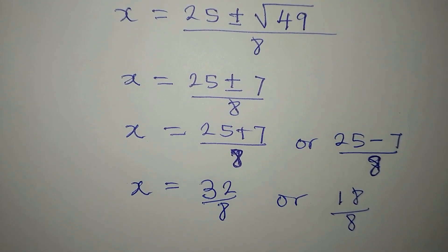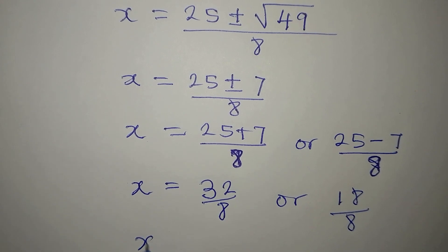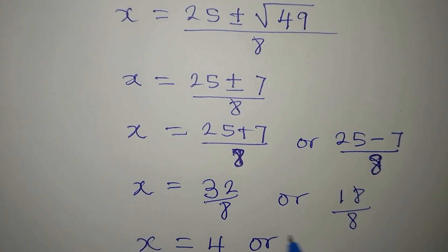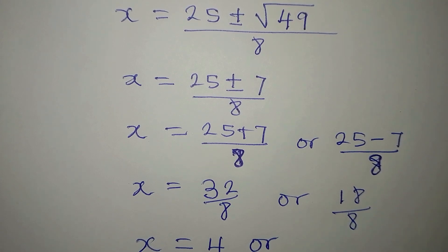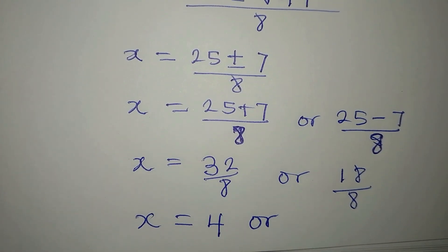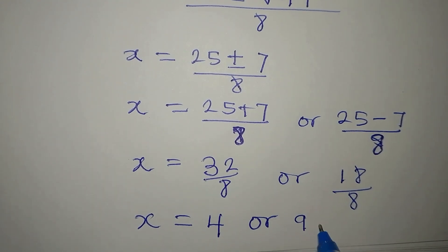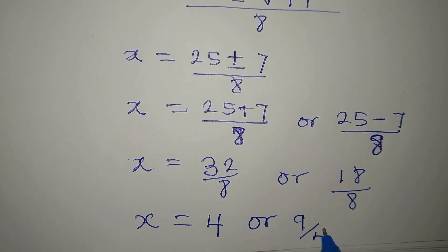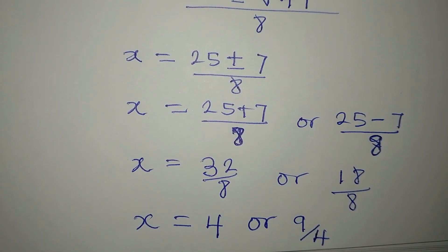Now, to continue with this, our x will be 32 divided by 8 is 4, or on this side, let's reduce it to a lower term. 2 goes into 18 we have 9, and 2 goes into 8 we have 4. So we have 9 over 4.